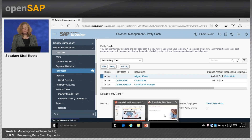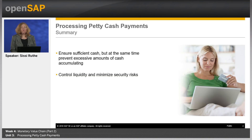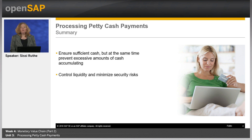What are the key learnings of this unit? You learned that you can record any cash receipts and cash disbursements for petty cash funds. By using cash transfers, you can ensure sufficient cash on your petty cash funds or prevent accumulating excessive cash amounts, enabling you to control liquidity and minimize security risks. Unit 4 of this week will cover how to monitor cash and liquidity based on provided reporting capabilities. Thanks for your attention and see you in Unit 4.